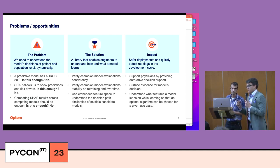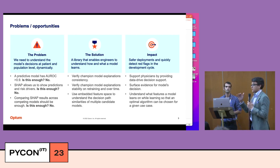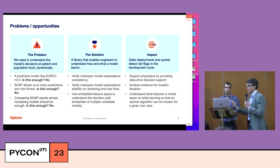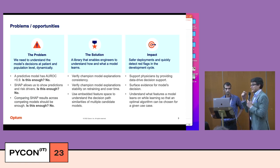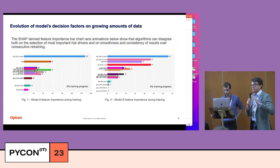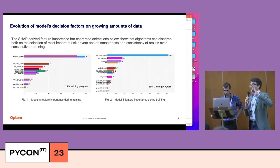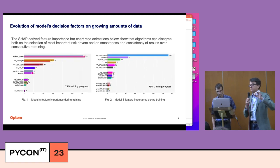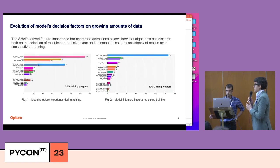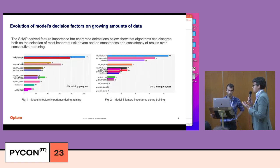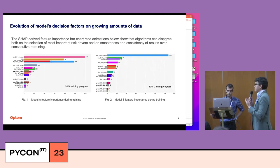We want to be able to explain model inferences — to figure out what the model has learned from the features and how it's using the features to generate predictions. We also want people to deeply understand how the model evolves over training: not just when the model has been trained and is working, but how did it go through training, how did it learn, and what did it learn?